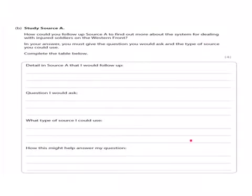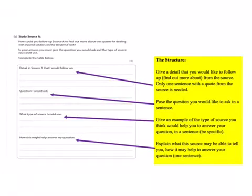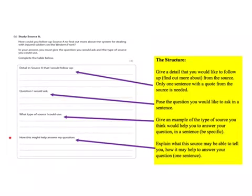The question is very nicely broken down into four sections, and each will require you to write a sentence. Initially, you will need to give a detail that you would like to follow up from the source. You will then need to pose a question, give what type of source you will use, and explain how this might help you answer your question. Each section only requires one sentence, and you should only spend five minutes on this question.